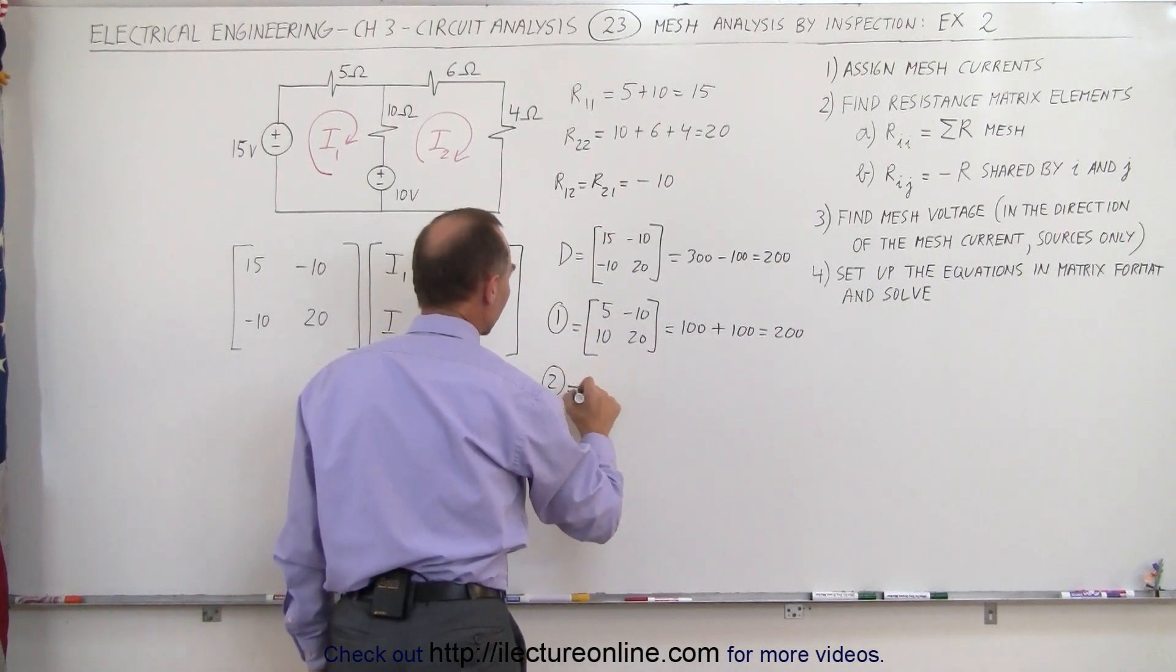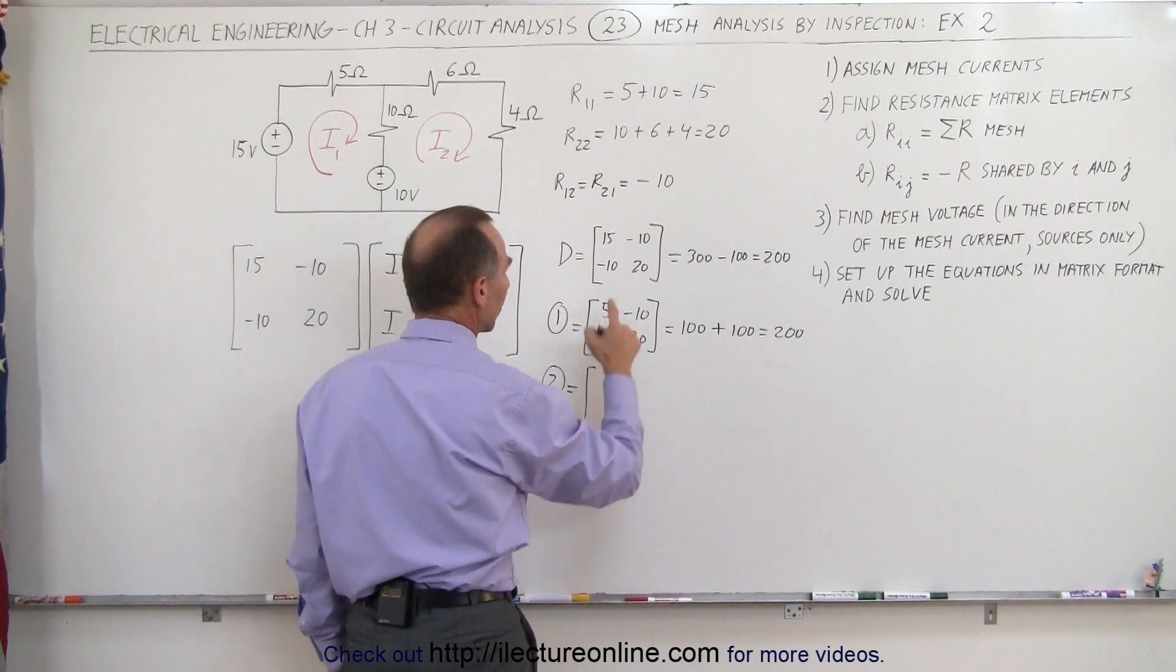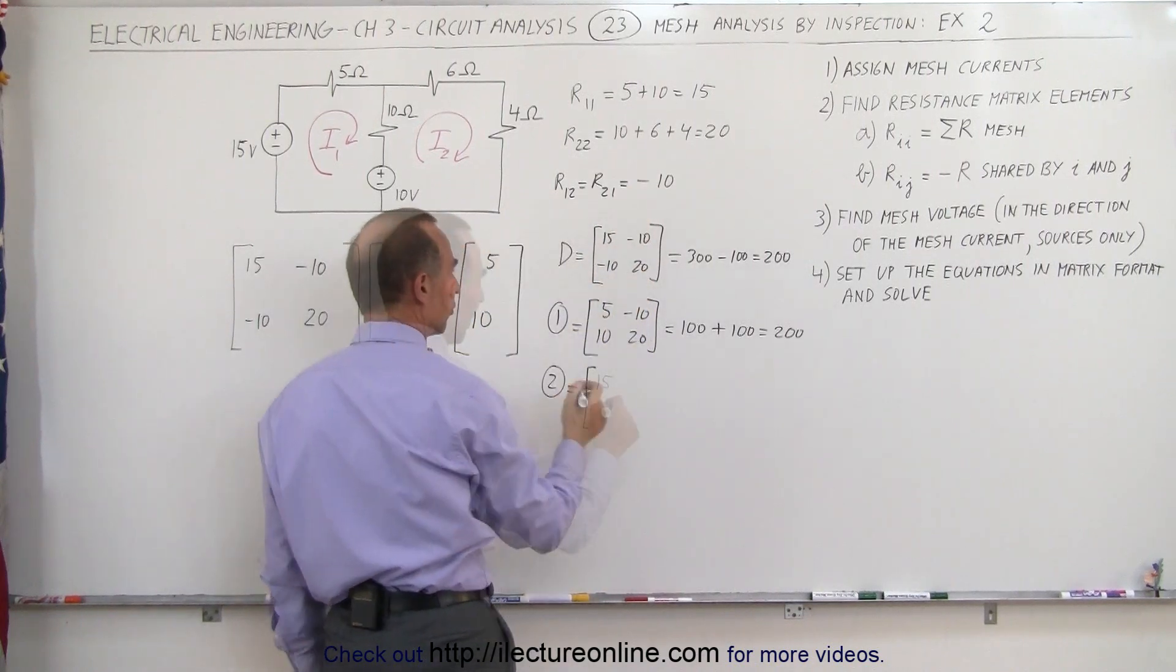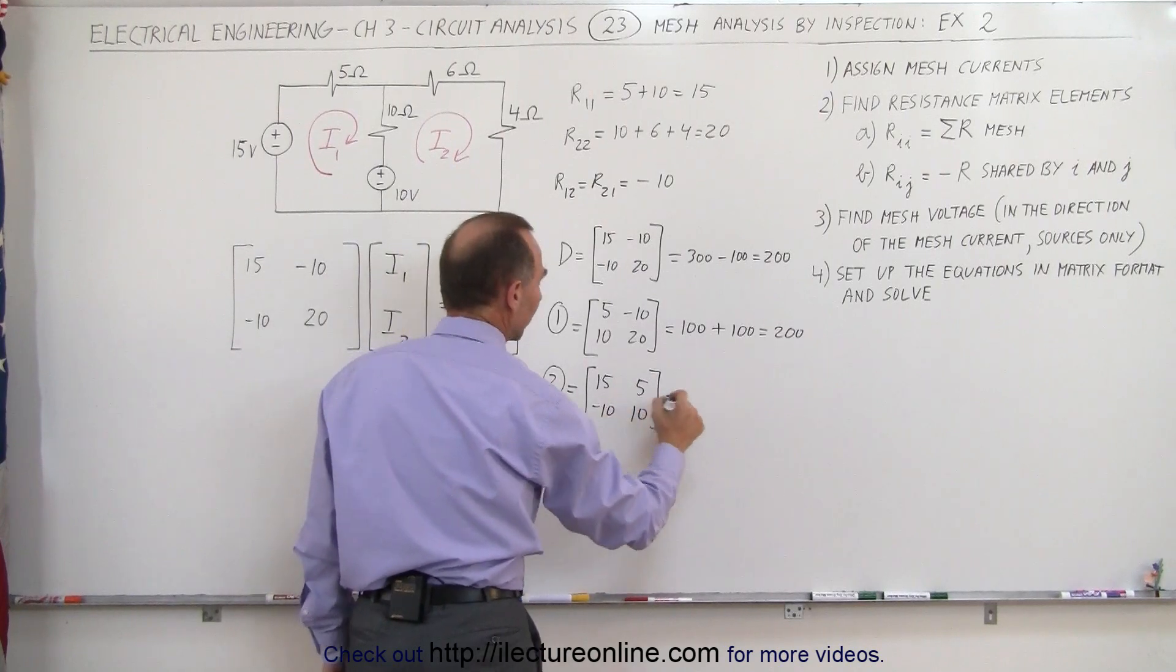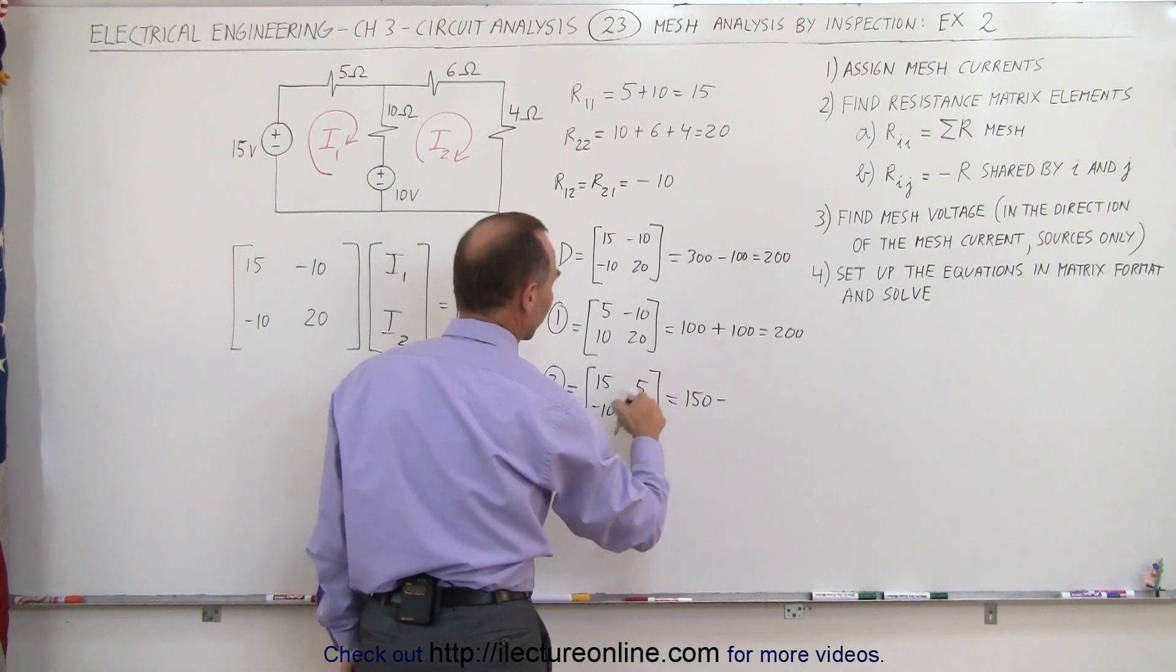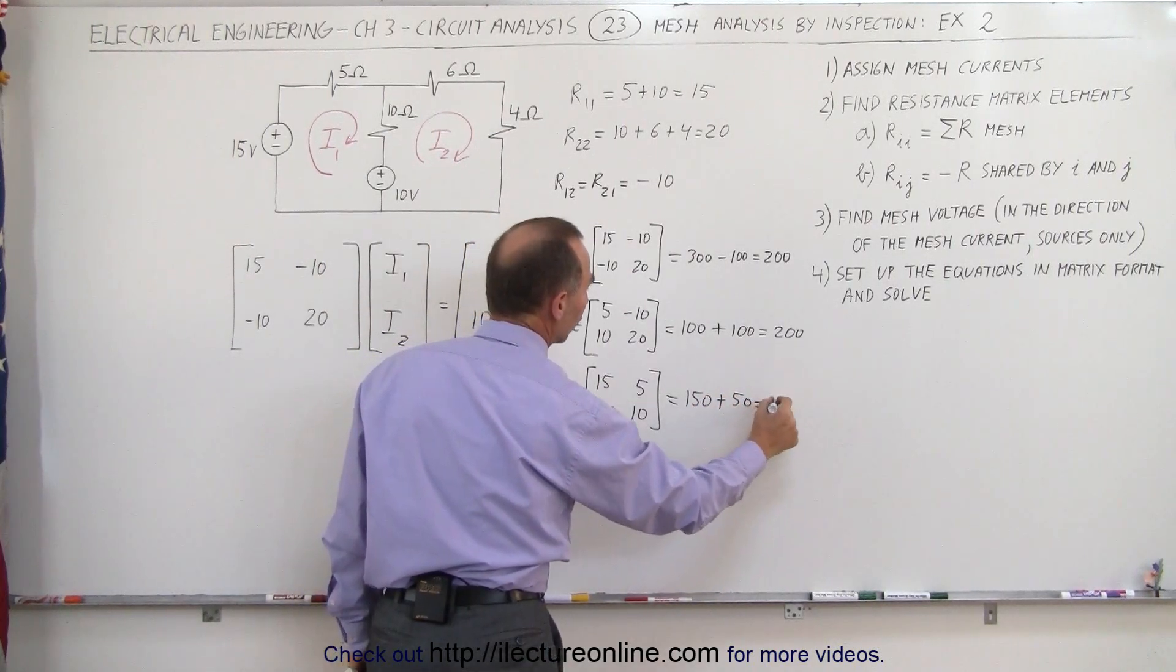We find the second matrix to find the second current by taking the determinant matrix but replacing the second column by the voltages, 15 and minus 10, but the second column becomes 5 and 10. This will give us 15 times 10, which is 150, minus, times a minus, because there's a minus here, 50, which is 200.